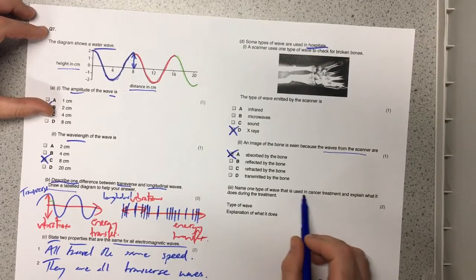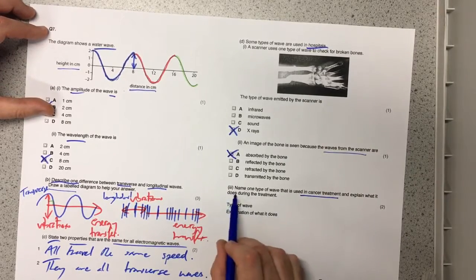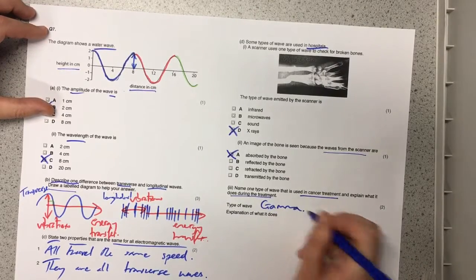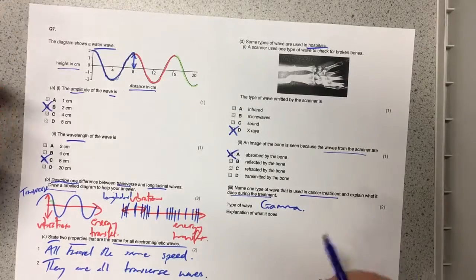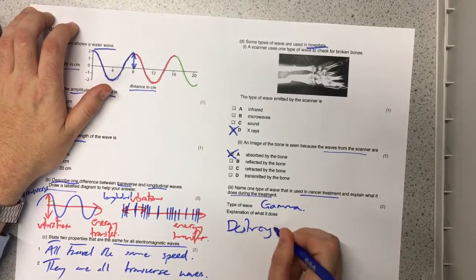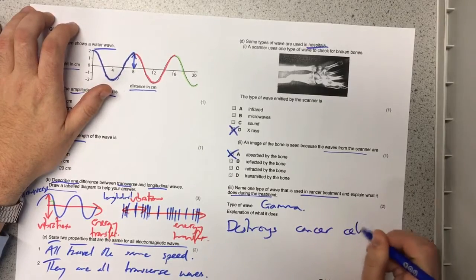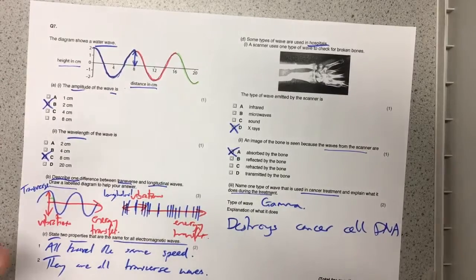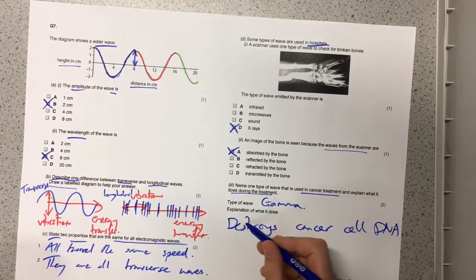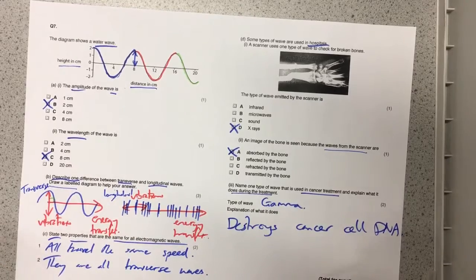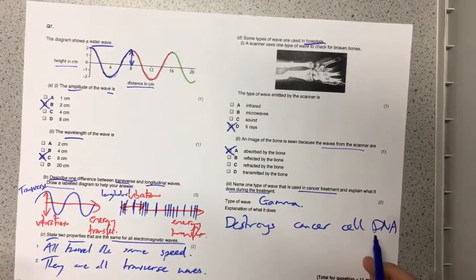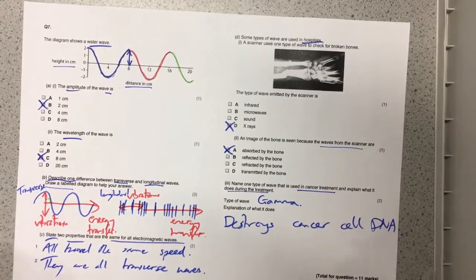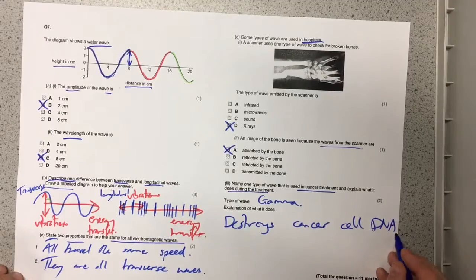Name one type of wave that is used in cancer treatment and explain what it does during the treatment. So the type of wave that's used in cancer treatment is gamma radiation and what it does is it destroys cancer cell DNA. And then those cancer cells are no longer able to replicate and this can lead to the cancer tumor shrinking and then either being removed by a surgeon or they just keep on hitting it with radiotherapy until the cancer cell gradually reduces and it's gone and hopefully that patient is saved.